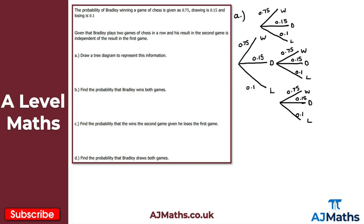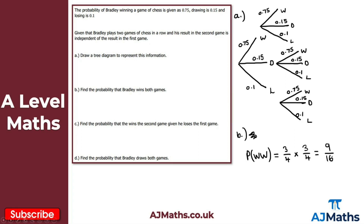That's our tree diagram to represent the information. For part B, find the probability that Bradley wins both games. He must win the first and win the second, so that's P(WW) = 3/4 times 3/4, which gives us 9/16. The probability that Bradley wins both games is 9/16.